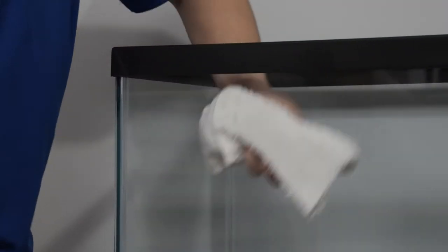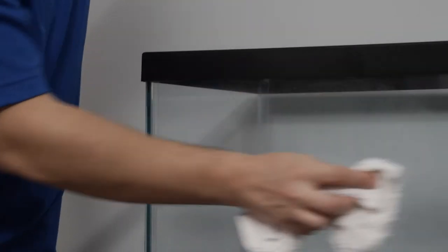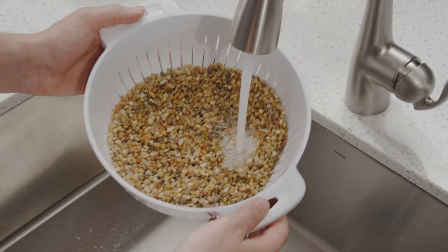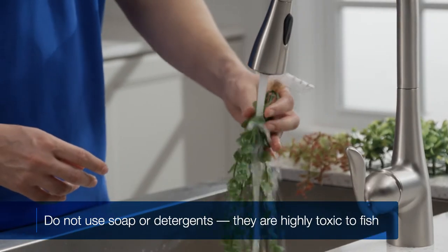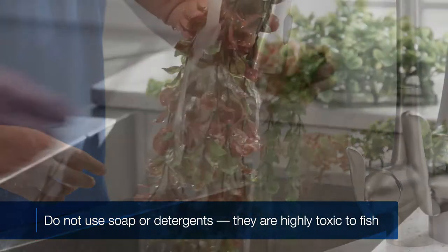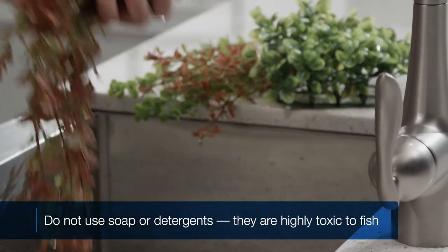To start, wipe down your aquarium inside and out using a soft, damp cloth. Then, thoroughly rinse your gravel, plants, and decorations. Do not use soap or detergent when cleaning. Both are highly toxic to fish.